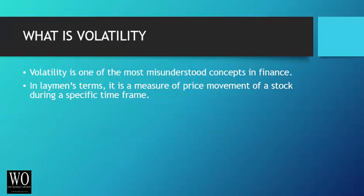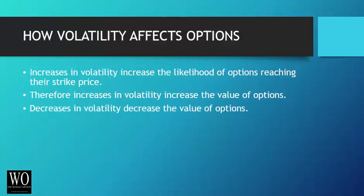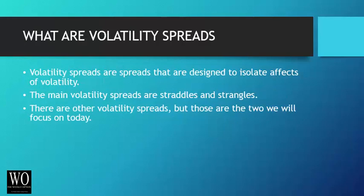What exactly is volatility? Volatility is one of the most misunderstood concepts in finance. In layman's terms, it is a measure of price movement of a stock or futures price during a specific time frame. Increases in volatility increase the likelihood of options actually reaching their strike price — therefore, increases in volatility will increase the value of options, and when volatility goes lower, the value of options also goes lower.